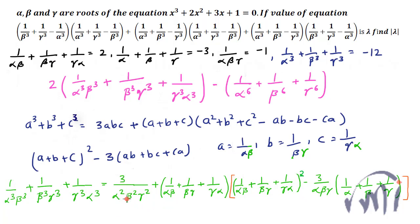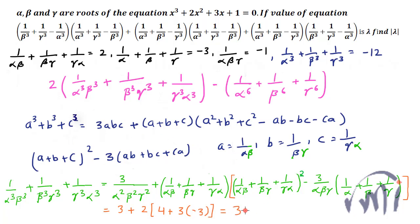So 3/(αβγ)² = 3/1 = 3. Then 2·[2² − 3·(−1/−1)·(−3)] = 2·[4 − 3·3] = 2·[4−9] = 2·(−5). Wait — that gives: 3 + 2·(4 − 3·(−1)·(−3)) = 3 + 2·(4−9) = 3−10 = −7. So 1/(α³β³) + 1/(β³γ³) + 1/(γ³α³) = −7.